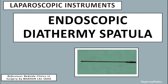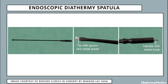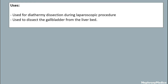Let's talk about the endoscopic diathermy spatula, which is a laparoscopic instrument. This is a picture showing the endoscopic diathermy spatula. It has a tip with a spoon-like metal blade and a handle with a metal knob. Uses: it is used for diathermy dissection during laparoscopic procedures and to dissect the gallbladder from the liver bed.